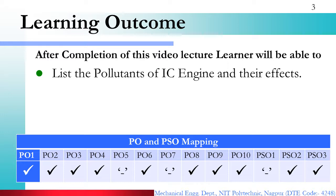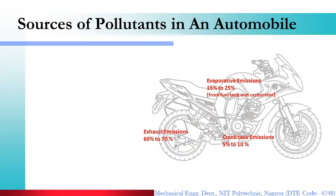This is all about the PO and PSO mapping. What we are going to learn in this video lecture has been explained in this first PPT. Now, before moving further, let us discuss the sources of pollutants in an automobile.